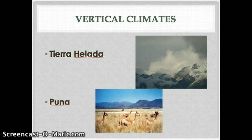Starting at the top, the Tierra Alada, which means the frozen land, is an area that's covered in permanent snow and ice — snow caps and glaciers. The Puna, which we have no translation to English for, is an area above the timber line, so only grasses grow here. It's used for grazing livestock in South America, mainly sheep and llamas and alpacas.